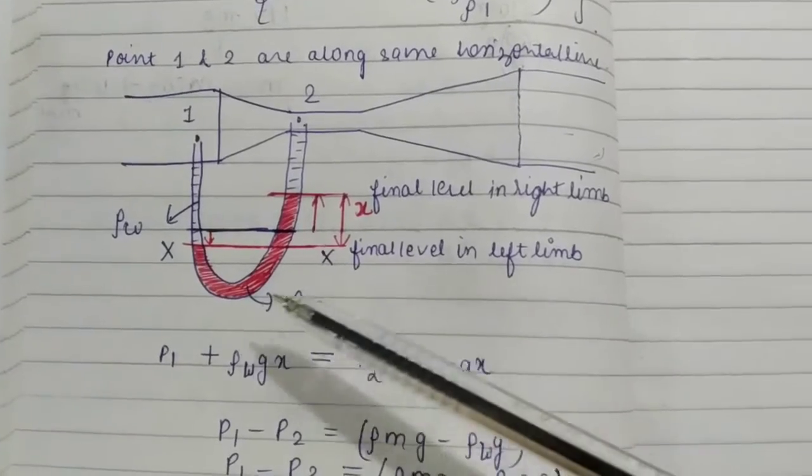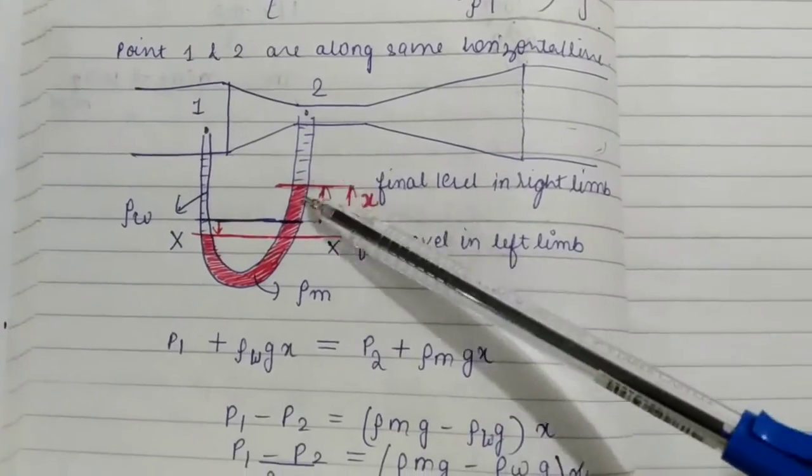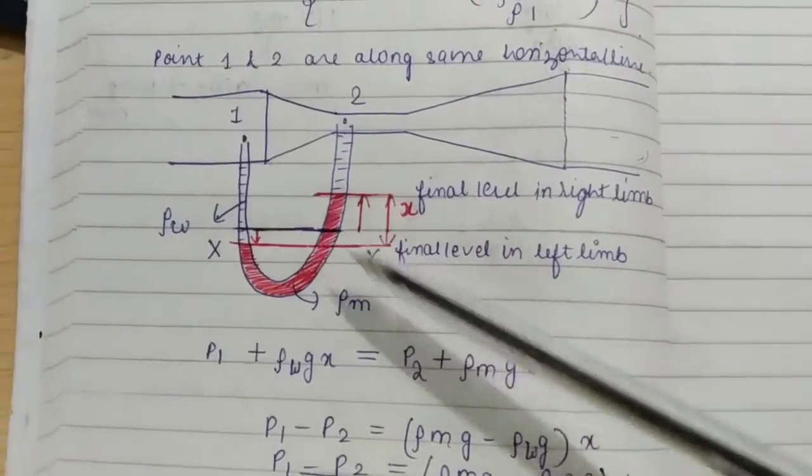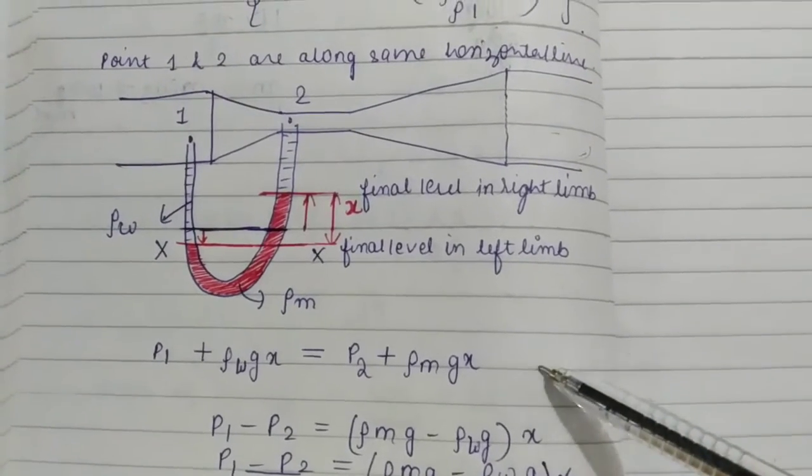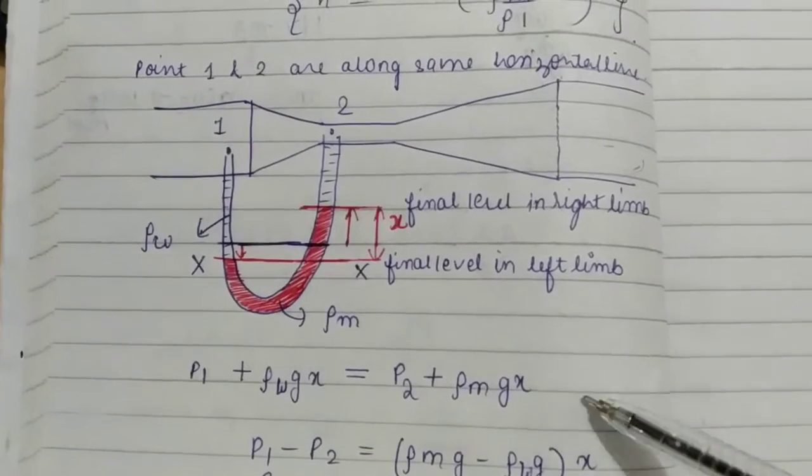Now, whatever is the remaining height that is same in both the limbs of water. This height and this height. That is why I have not written that but you can write that it will just cancel out.